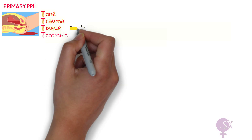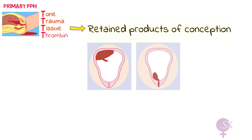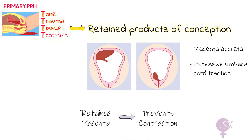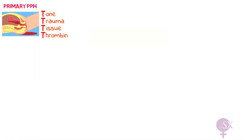The third T is tissue, referring to retained products of conception. The entire placenta or a placental lobe may not be delivered and is left inside the uterus. This is more likely when the placenta has grown deep within the uterine wall — called placenta accreta — which is very difficult to separate. Essentially, retained placental tissue will prevent uterine contractions from occurring, resulting in uterine atony and PPH.